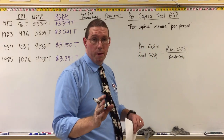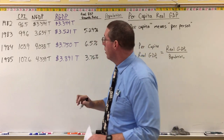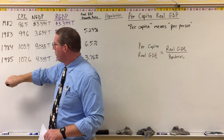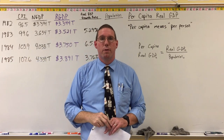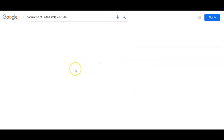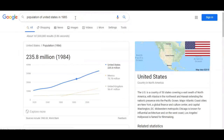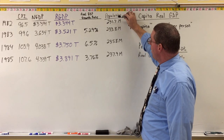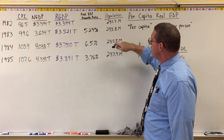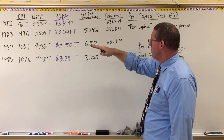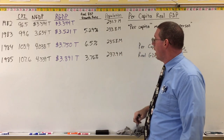So why don't you look up on the internet the population for the United States in 1982, 1983, 1984, and 1985, and then we'll continue. Here are the numbers I came up with: 1982, population 231.7 million; 1983, 233.8 million; 235.8 million in 1984; and 1985, 237.9 million.